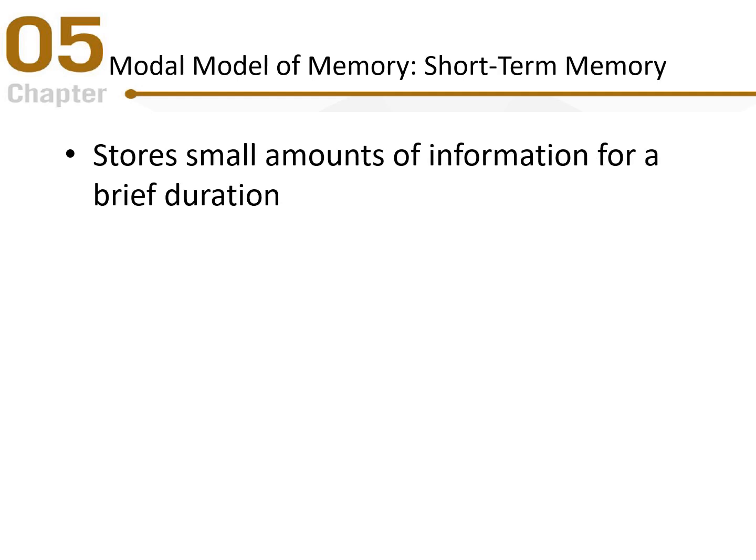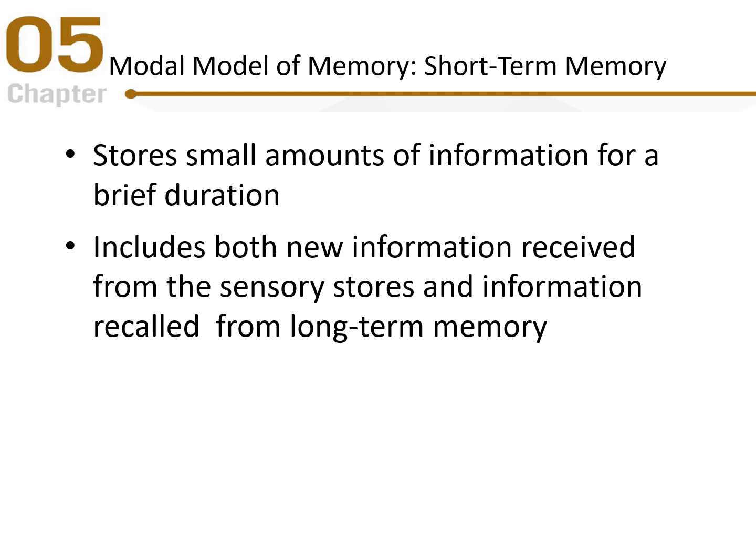Short-term memory stores small amounts of information for a brief duration — around 15 to 20 seconds. It includes both new information coming in from sensory memory and information recalled from long-term memory. In this model, information retrieved from long-term memory must first pass through short-term memory before we can use it.